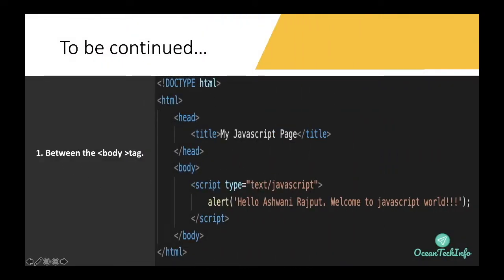For the first method — between the body tag — this is your HTML5 document with a head tag and a body tag. Keep your script tag at the end of your closing body tag. You can specify script type as text/JavaScript, though modern browsers already know it's JavaScript if you just use the script tag. You can write your JavaScript code such as an alert function inside it, and this code is placed between the body tag at the bottom of the closing body tag.